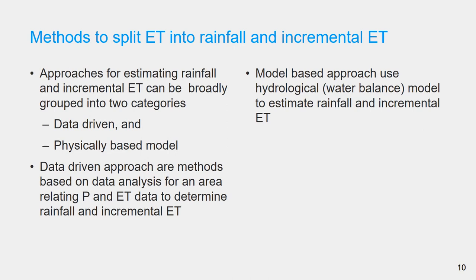Methods to split evapotranspiration into rainfall and incremental components can be broadly grouped into two categories: data-driven approaches and model-based approaches such as hydrological or crop models. Data-driven methods are based on data analysis, relating observed precipitation and evapotranspiration data to determine rainfall and incremental evapotranspiration. Model-based approaches use hydrological or water balance models to estimate rainfall and incremental evapotranspiration.